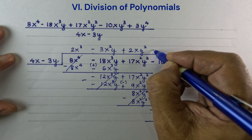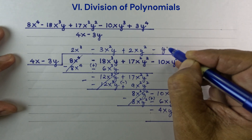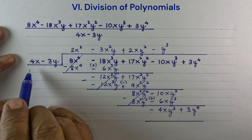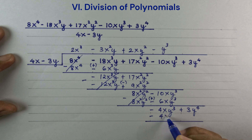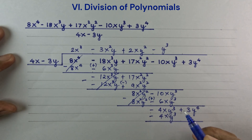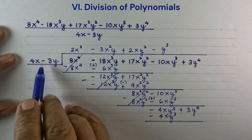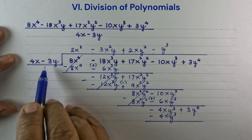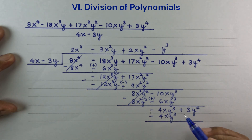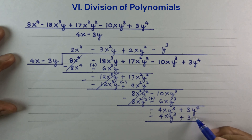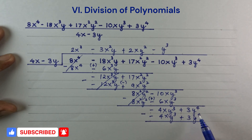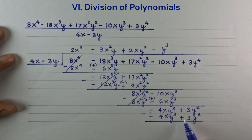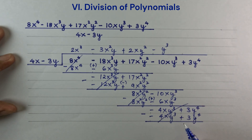Minus y cubed times 4x is minus 4xy cubed. Minus y cubed times minus 3y is plus 3y to the 4th. So let's subtract — we have two identical binomials here, so subtracting two identical binomials, we simply cancel them out.